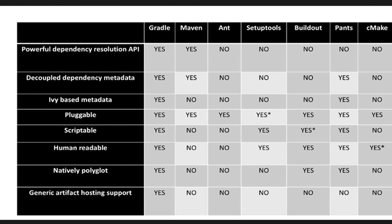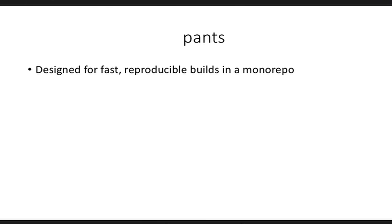Pants is designed for monorepos. Monorepos are a concept pioneered at Google that is now catching on at other bigger companies — pretty much every ex-Googler brings the idea of monorepos wherever they go. Essentially it just means having all your code — not just Python code, but pretty much all the code used in a company — under one single repo. At Google, they have probably billions of lines of code under one repo, including Android source code, Go source code, Gmail, and search.